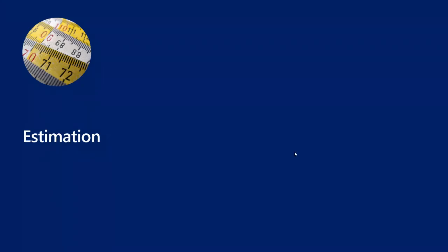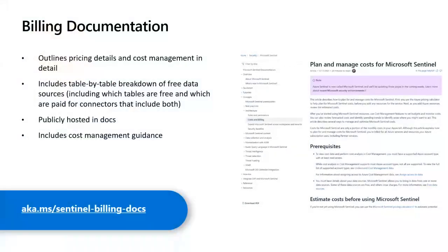Thank you, Innocent. So Innocent talked to us about the different new features that are available now in Microsoft Sentinel, like the archive tier, basic logs, etc. Now we're going to take a look at how we estimate the ingestion and the cost we're going to have in our Sentinel environment. First of all, I wanted to mention the billing documentation we have in our official documentation — three super useful documents: one about planning, one about monitoring your cost, and one about reducing your costs. Please visit those three articles via the link shown on the page.